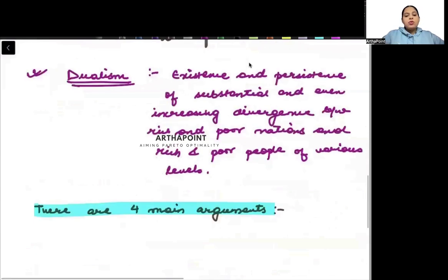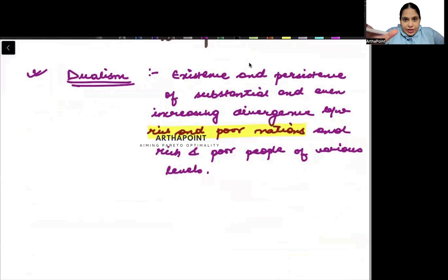Now, let's talk about what is dualism. Dualism: the existence and persistence of substantial and even increasing divergence between rich and poor. Within the same nation, the existence and divergence between rich and poor nations and rich and poor people. That is called as dualism.